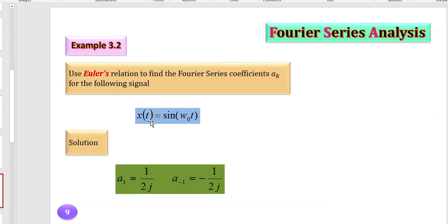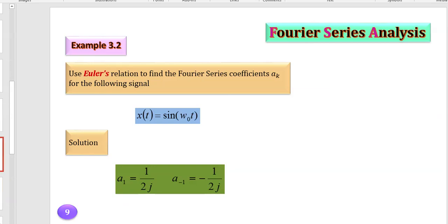Let's do another example. We want to write x(t) = sin(ω₀t) as a Fourier series and find the aₖ. Using Euler's formula: x(t) = (1/2j) e^(jω₀t) − (1/2j) e^(−jω₀t). Therefore a₁ = 1/(2j) and a₋₁ = −1/(2j). That's as simple as that.